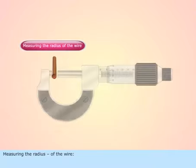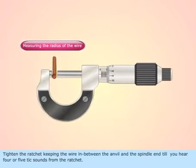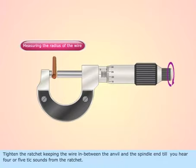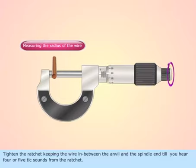Measuring the radius of the wire. Tighten the ratchet, keeping the wire in between the anvil and the spindle end till you hear 4 or 5 tick sounds from the ratchet.